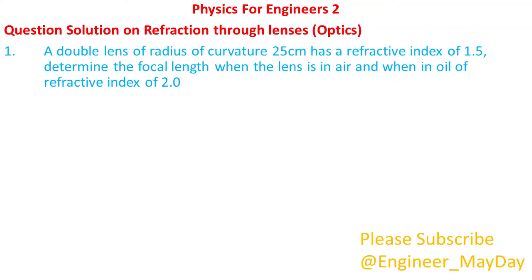Let's begin with this question. A double lens of radius of curvature 25 centimeters has a refractive index of 1.5. Determine the focal length when the lens is in air and when in oil of refractive index of 2.0.